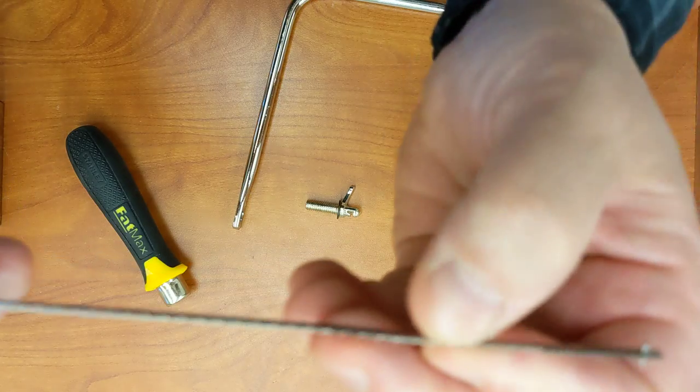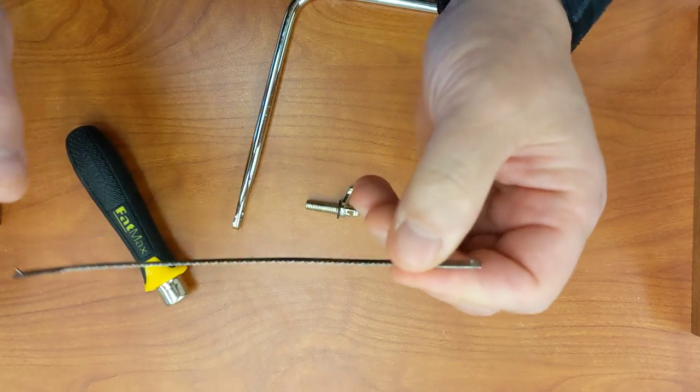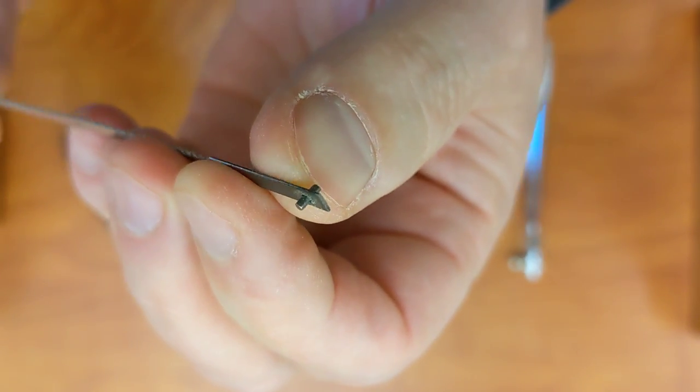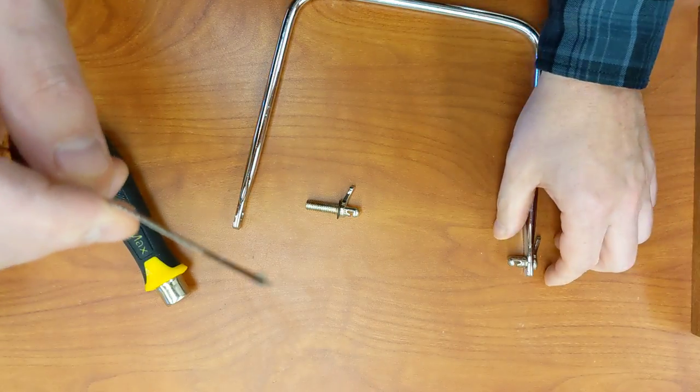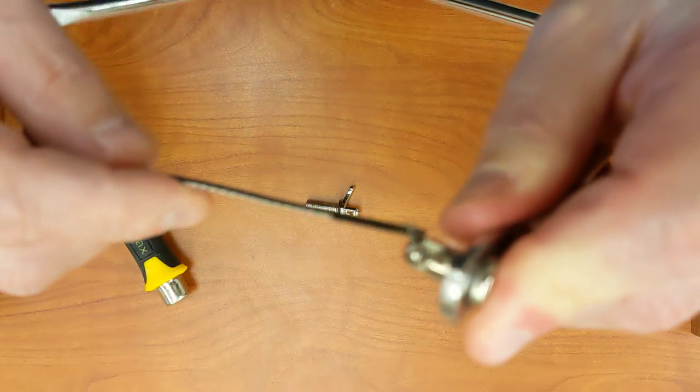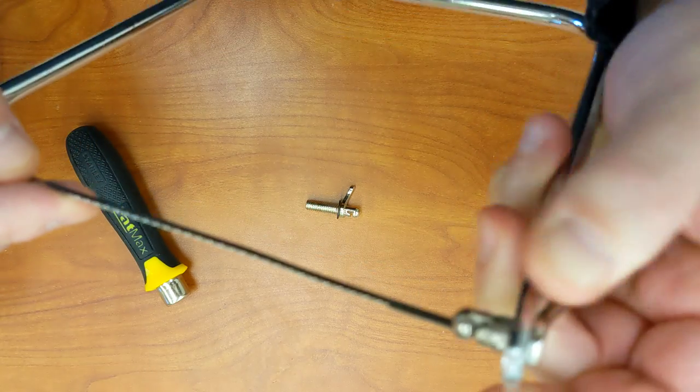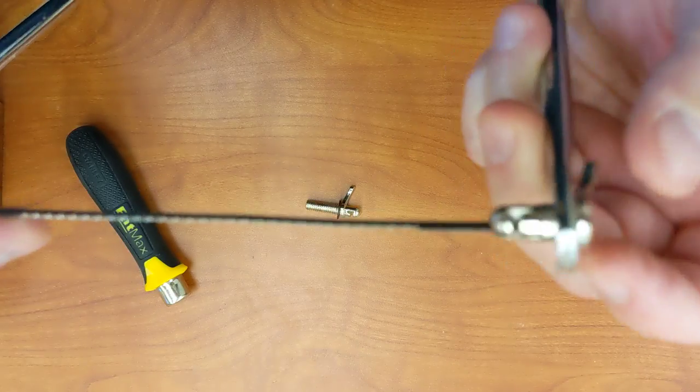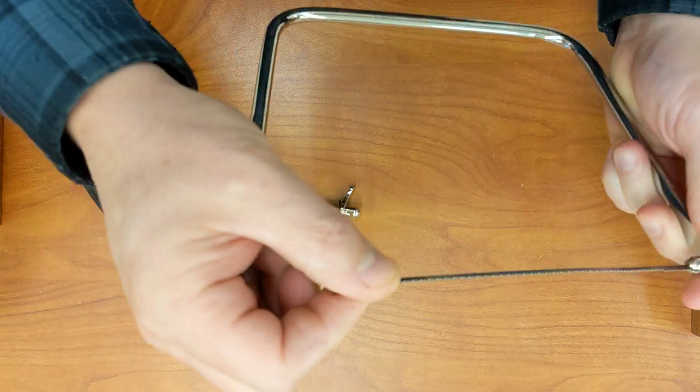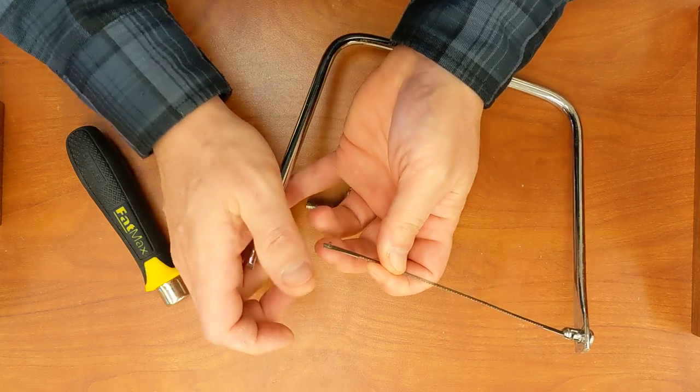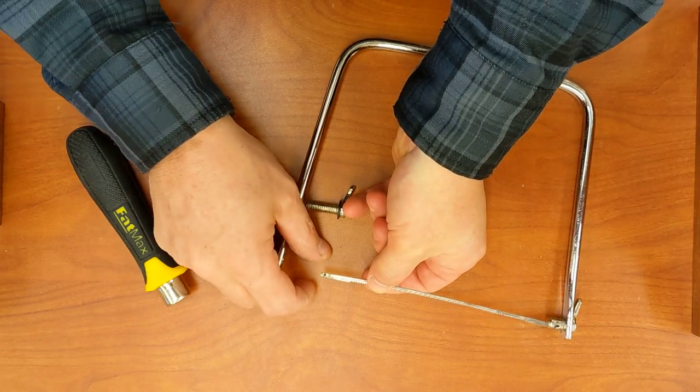Reassembling the coping saw goes as follows. These little tiny pins on the end of the blade have to go into the slots on the guide pins. We're going to put that in the left side first, keeping this open. Actually, I'm going to put that down for a second.